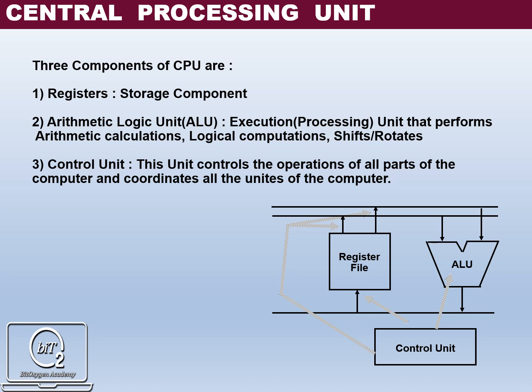Basically, three components of CPU are registers, ALU, and CU. First, registers are temporary storage areas which are responsible for holding data that is to be processed. They store instructions and data in a processor. Next, ALU means Arithmetic Logic Unit. It is an execution unit that performs arithmetic calculations, logical computations, and shift operations.